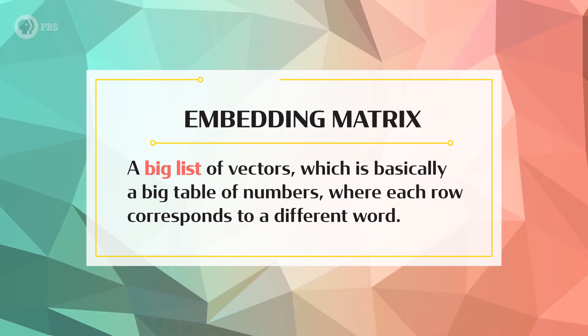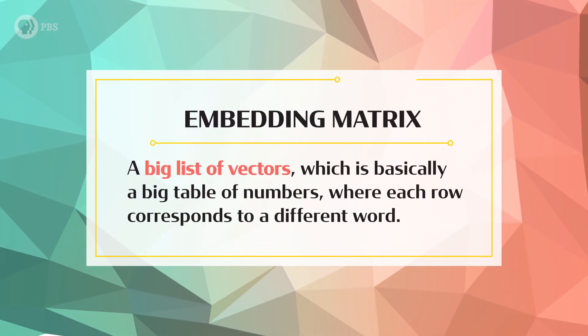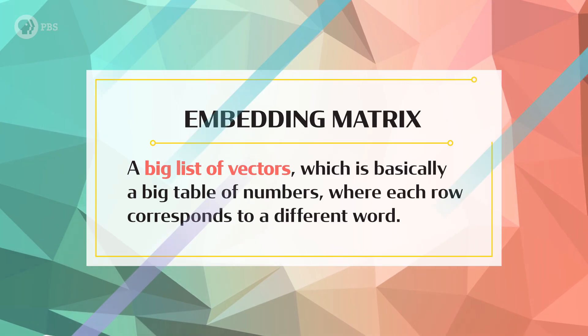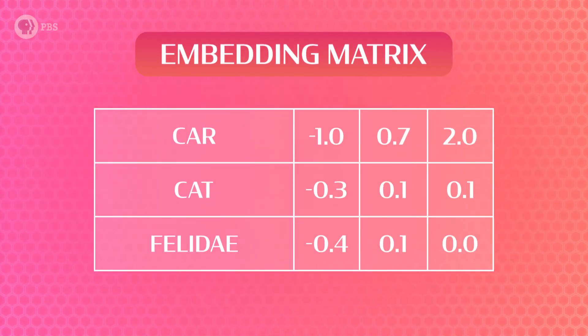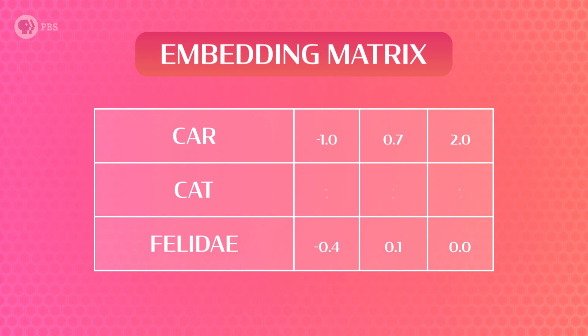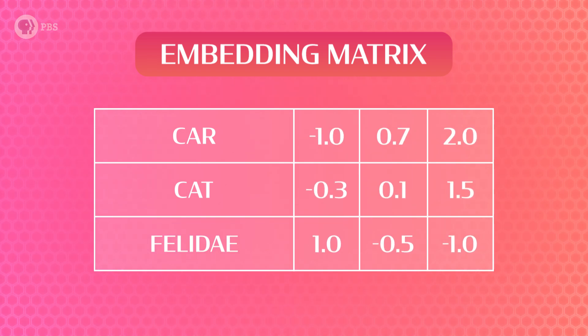Just like we discussed in the natural language processing video last week, this is an encoder-decoder framework. An embedding matrix is a big list of vectors — basically a big table of numbers where each row corresponds to a different word. These vector rows capture how related two words are, so if two words are used in similar ways, the numbers in their vectors should be similar. But to start, we don't know anything about the words, so we just assign every word a vector with random numbers. We replaced all the words with numbers in our training data, so when the system reads in a number, it just looks up that row in the table and uses the corresponding vector as input. Words become indices, which become vectors, and our embedding matrix is ready to use.